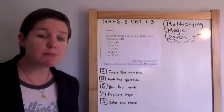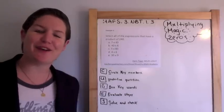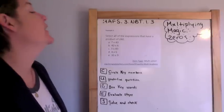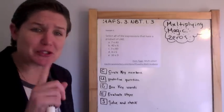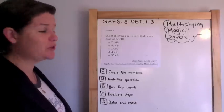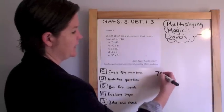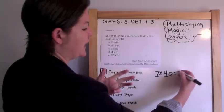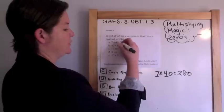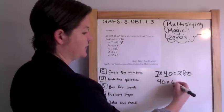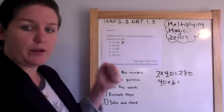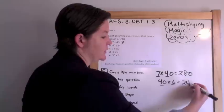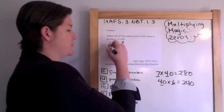This is the last one. I'm never tired of math — math energizes me, and it should energize you too. Number five: select all the expressions — expression means no equal sign — that have a product of 240. Seven times 40: seven times four is 7, 14, 21, 28, add the zero — that is not 240. 40 times six: 4, 8, 12, 16, 20, 24 — magic zero — yes, that is correct.